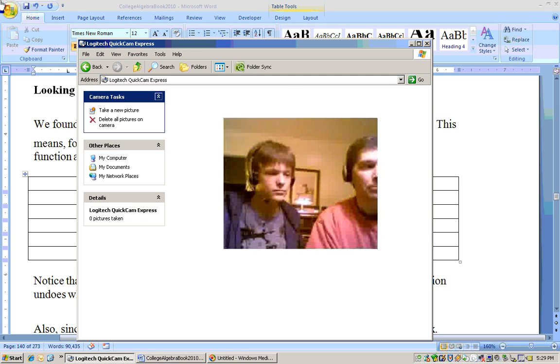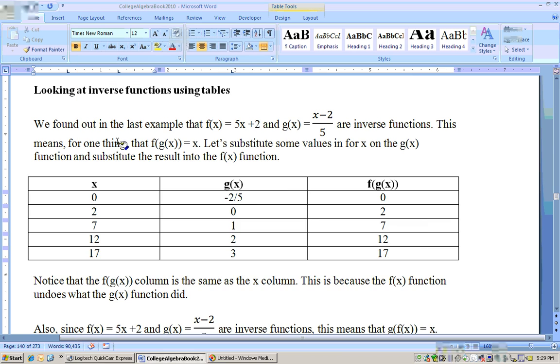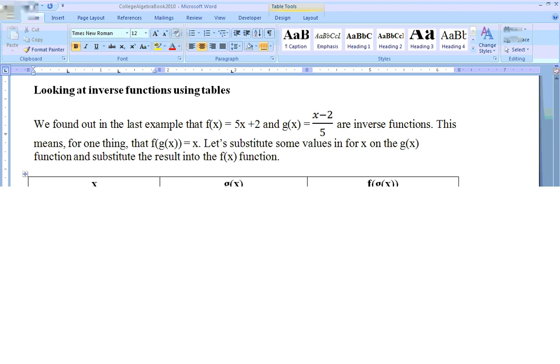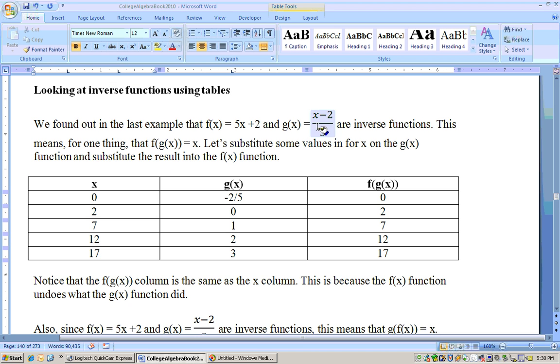Let's see what this does in terms of a table here. We found out these two functions are inverses of each other. Let's see what that means. If I substitute any number in for x, I just picked easy numbers to deal with. If I put zero in for x on the g function, zero minus 2 is minus 2, and I get minus 2 fifths. Now if I substitute minus 2 fifths in here.